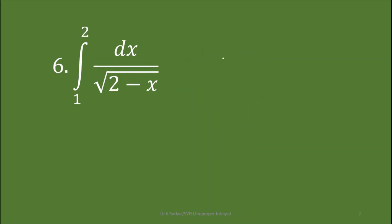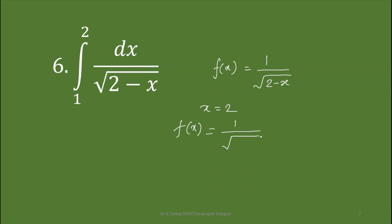In question number six, the integrand is 1 by square root of (2 minus x) with limits 1 and 2. If we put x equals 1, then 2 minus 1 is 1, square root of 1 is 1, and f(x) is 1 — a finite number, so no problem with the lower limit. But if we put x equals 2, then f(x) equals 1 by square root of (2 minus 2), that is 1 by 0, which is infinite. So this is also an improper integral.